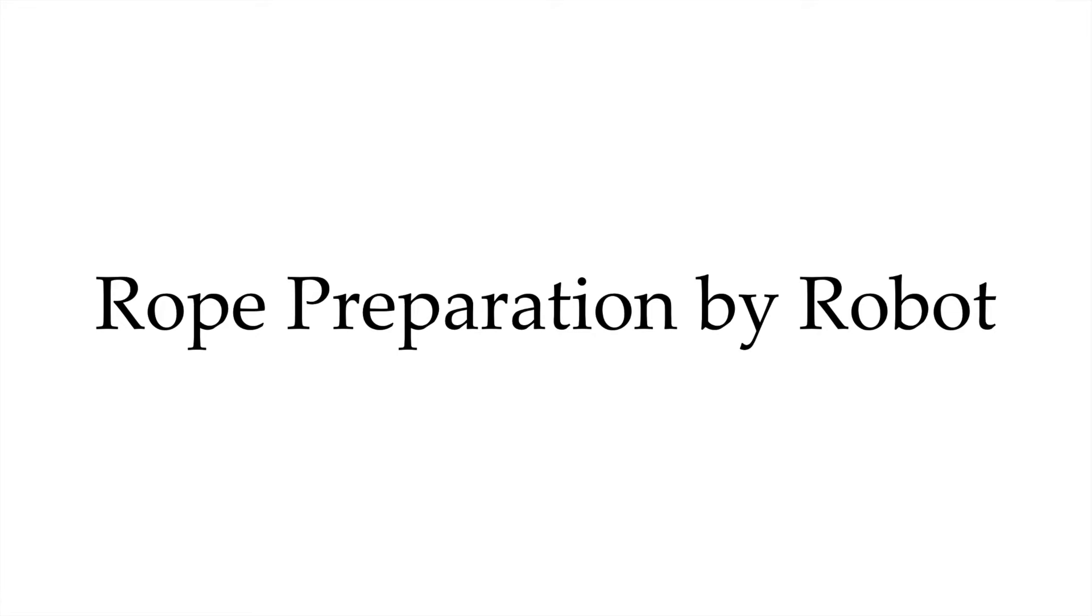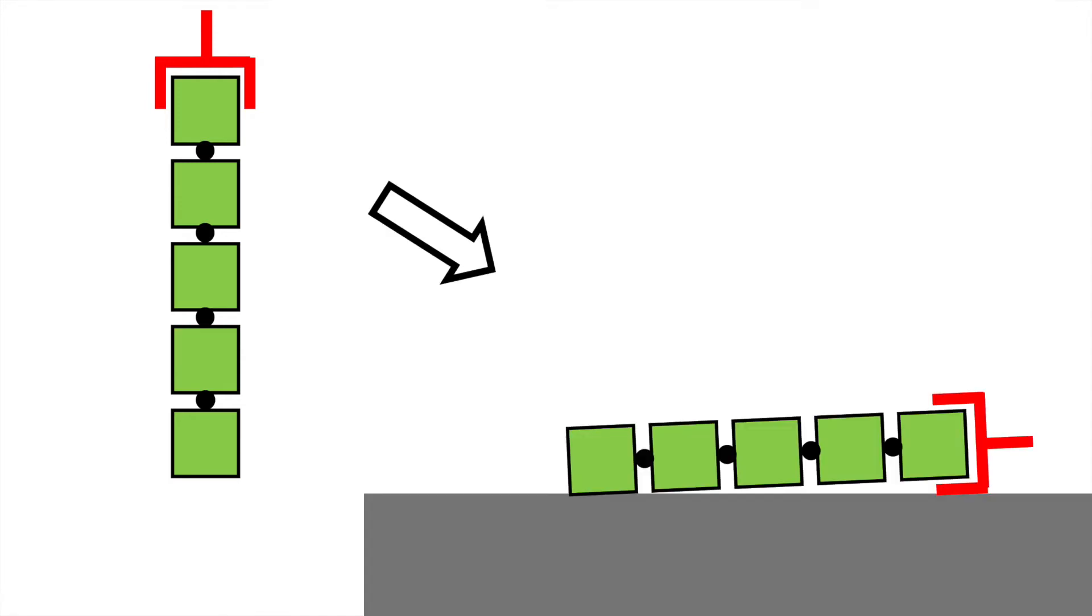My project is about enabling robots to do this rope preparation process. Let's say this is a rope on the left with five links, and we want to prepare this rope for robot knot tying. For example, we can place this rope on a table.